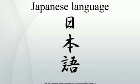Dozens of dialects are spoken in Japan. The profusion is due to many factors, including the length of time the archipelago has been inhabited, its mountainous island terrain, and Japan's long history of both external and internal isolation. Dialects typically differ in terms of pitch accent, inflectional morphology, vocabulary, and particle usage. Some even differ in vowel and consonant inventories, although this is uncommon.